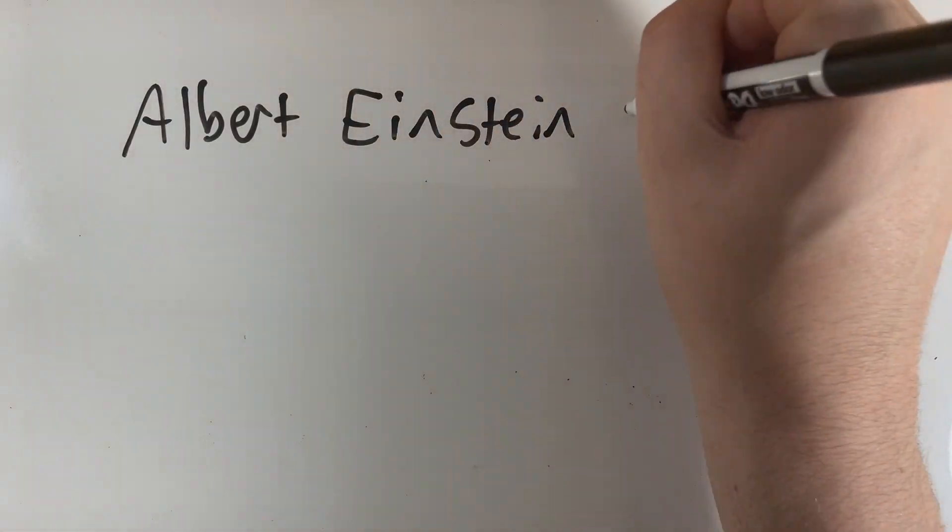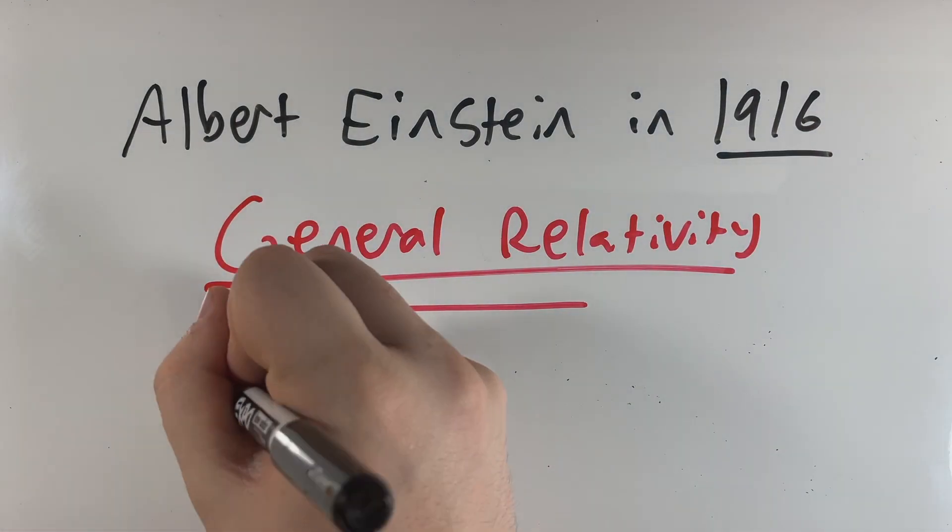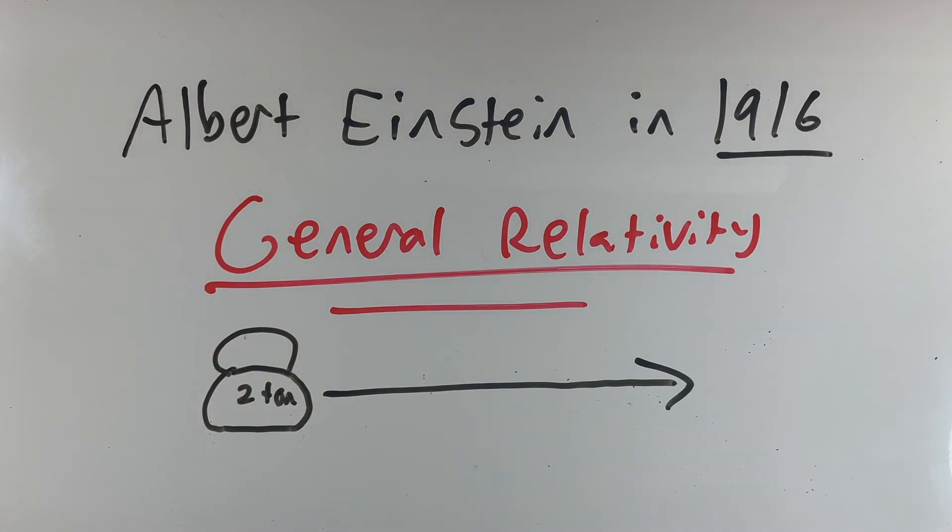That's a specific example of gravity waves. But what if we wanted to talk more generally for a second? Well, gravity waves were hypothesized by Albert Einstein, the one and only, in his theory of general relativity. He predicted that when massive objects were accelerating, they would disrupt reality around them, creating ripples.